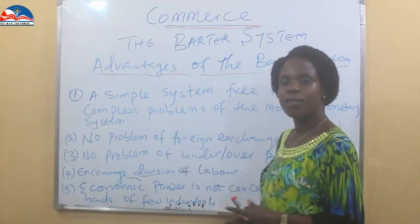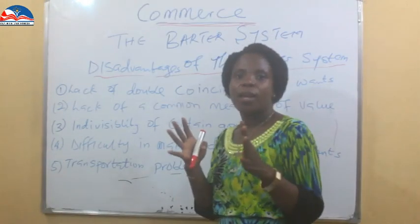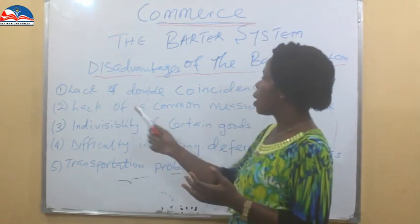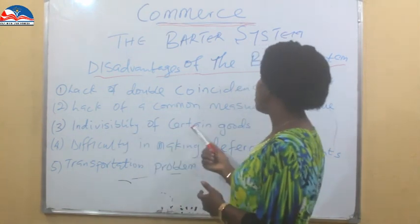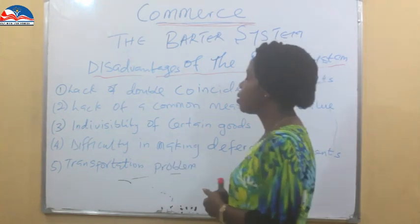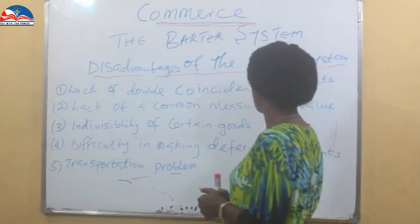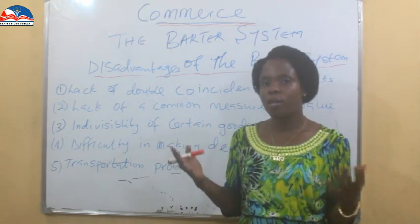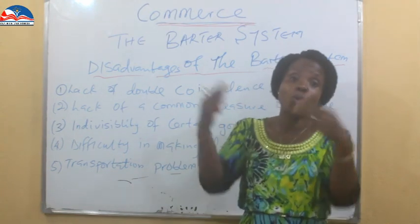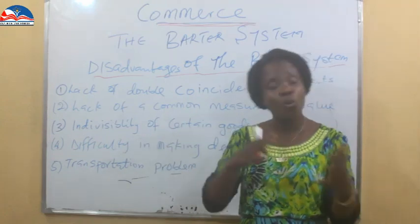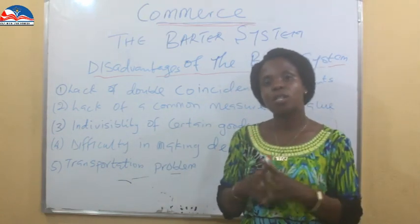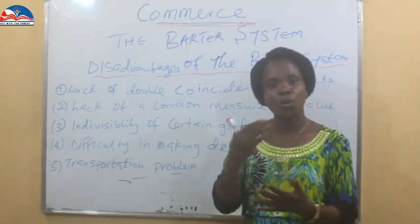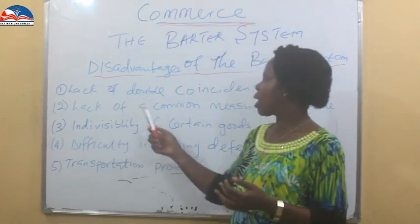Now let's see the disadvantages of the barter system. The disadvantages include: lack of double coincidence of wants, lack of a common measure of value, indivisibility of certain goods, difficulty in making deferred payments, and transportation problems. What is double coincidence of wants? I might have my product and want to exchange it, but I might not immediately find who to exchange with — I have to go looking for someone who wants my products or services. Moving around looking for those who need what you have was a major problem.